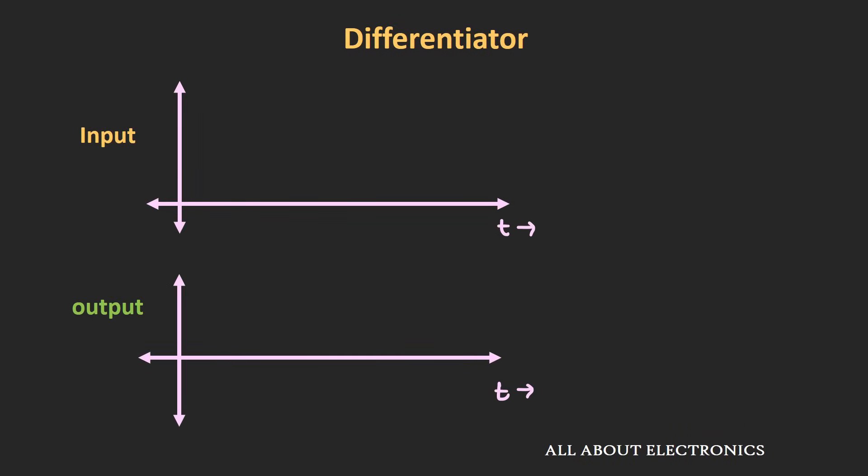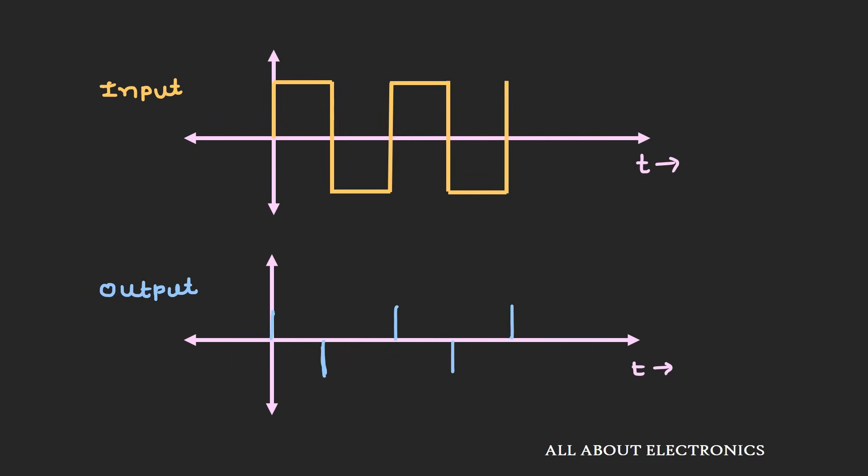If you apply a DC signal to the differentiator, then the output will be equal to zero, because the signal is not changing with time. On the other hand, if you apply a square wave with a very fast rise time, then at the output you will get spikes where that fast transition is happening. In this way, this differentiator circuit can be used to find the high frequency component of the input signal or for edge detection.